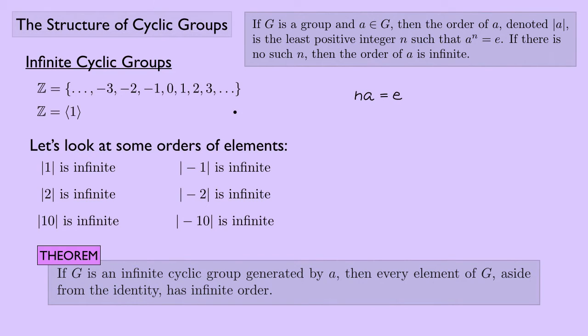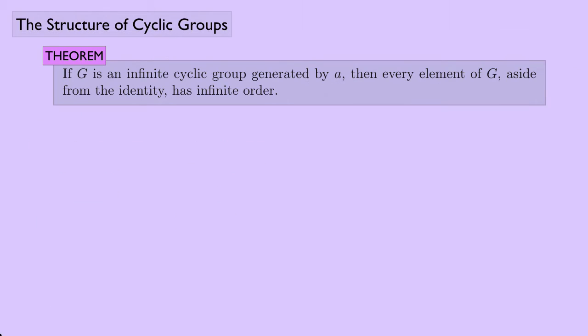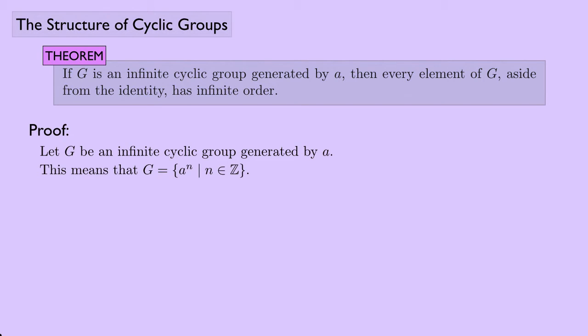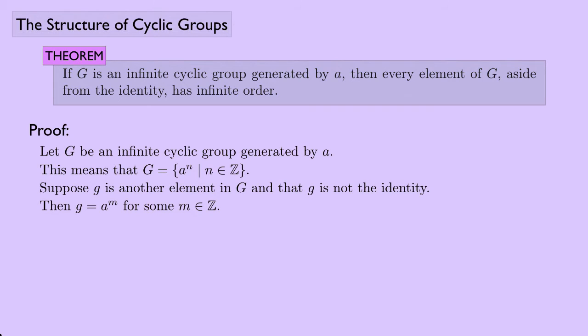This gives us a theorem: if G is an infinite cyclic group generated by A, then every element of G aside from the identity has infinite order. We saw this for the integers under addition, but it holds for any infinite cyclic group. For the proof, let G be an infinite cyclic group generated by A, so G consists of all powers of A. Suppose g is another element of G that is not the identity; then g must be a power of A, say g = A^m.